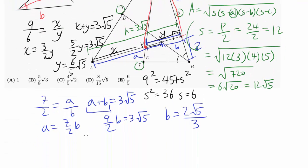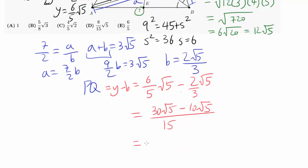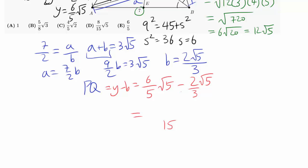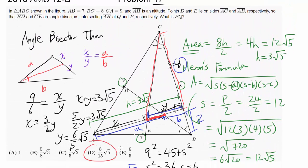We can now find PQ. PQ equals y minus b: y equals (6/5)√5 and b equals (2√5)/3. Getting a common denominator of 15: (18√5)/15 minus (10√5)/15 equals (8√5)/15. Wait — let me correct that: 18 minus 10 is 8, so PQ equals 8√5 divided by 15. That's our answer, choice D.